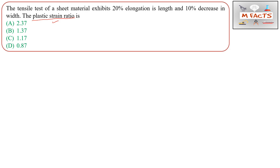The question is: a tensile test of sheet material exhibits 20% elongation in length and 10% decrease in width. We need to find the plastic strain ratio. So first we will see what is the plastic strain ratio and what is the formula for it. I will write the formula here.